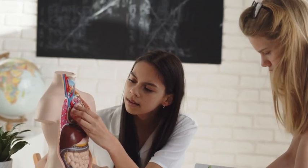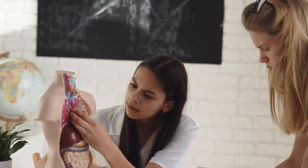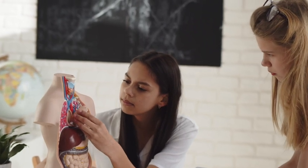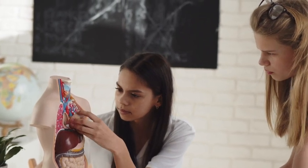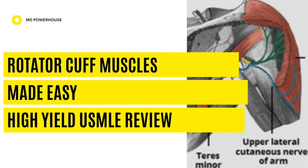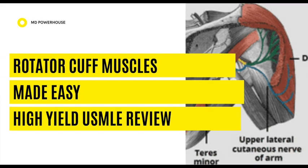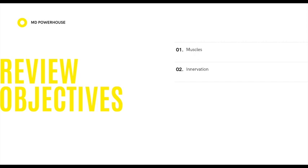If you want to avoid ever losing points on exam day about this high yield topic on rotator cuff muscles, all you have to do is dedicate 17 minutes and watch this entire video. In this review, we're going to take a closer look at what are the rotator cuff muscles, which nerves innervate them, what are their functions or actions, some high yield mnemonics so that you will never forget them, and high yield questions so that you can prepare for exam day.